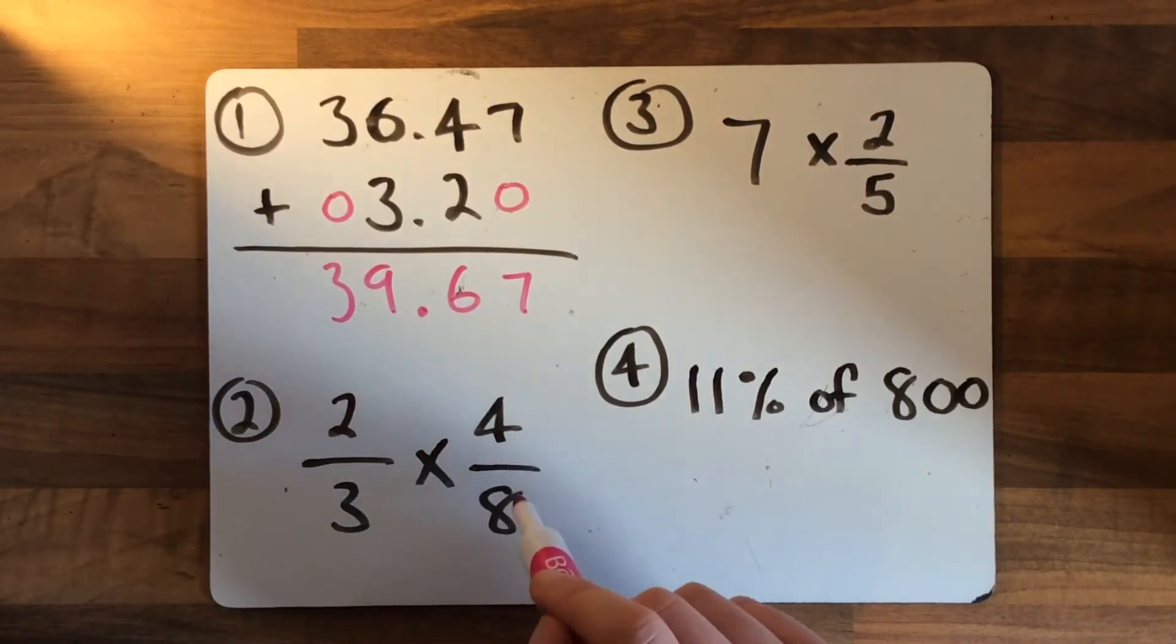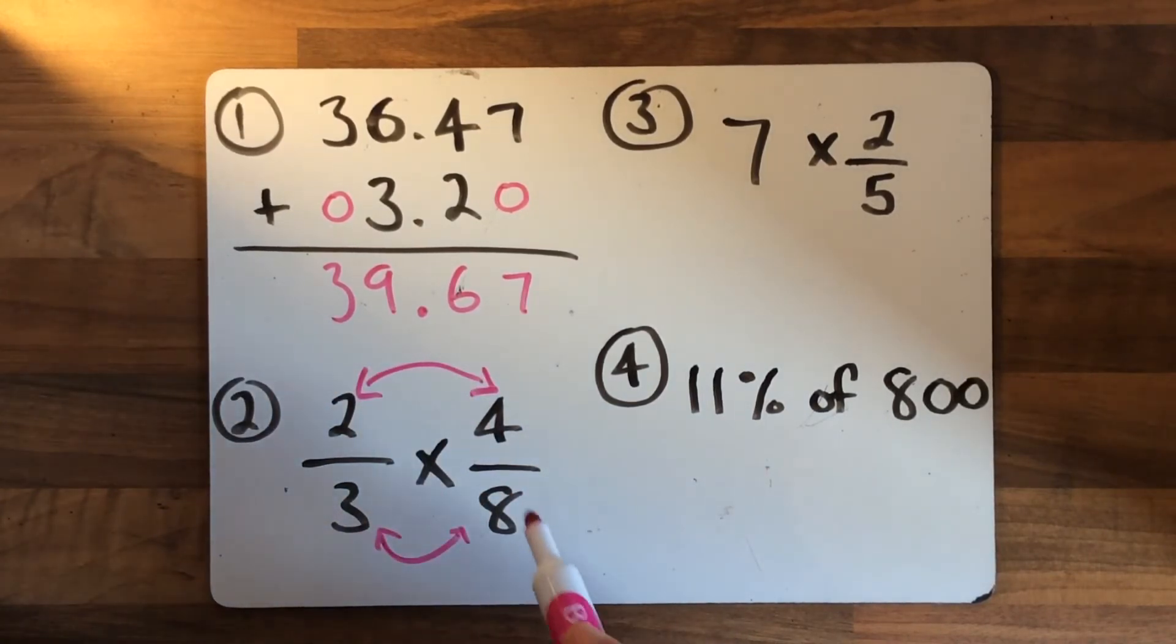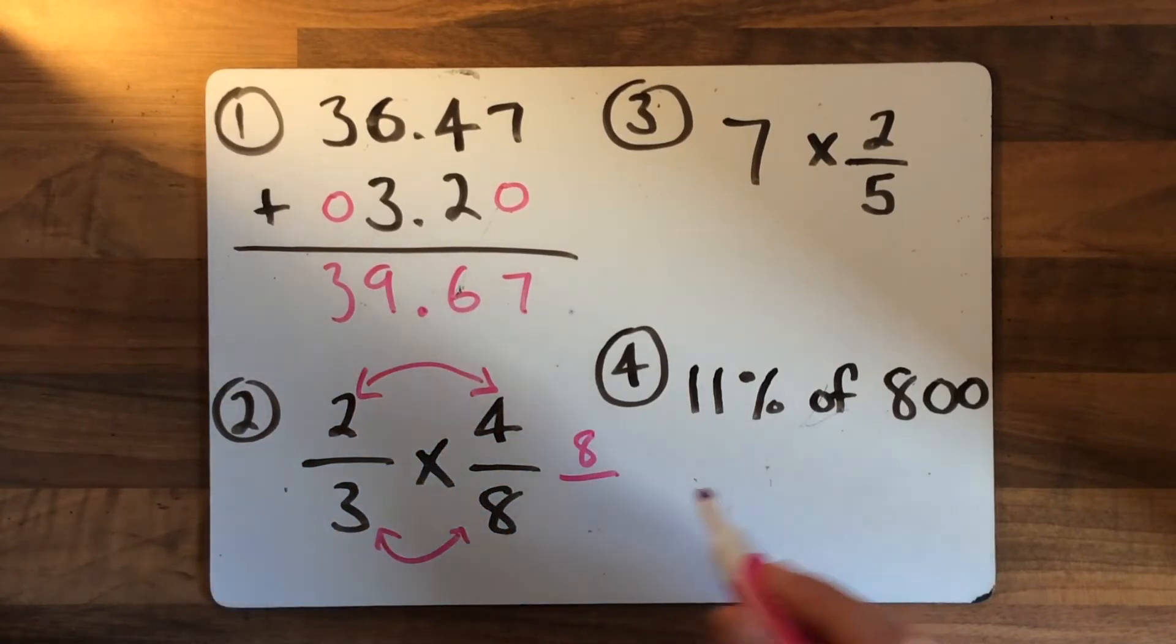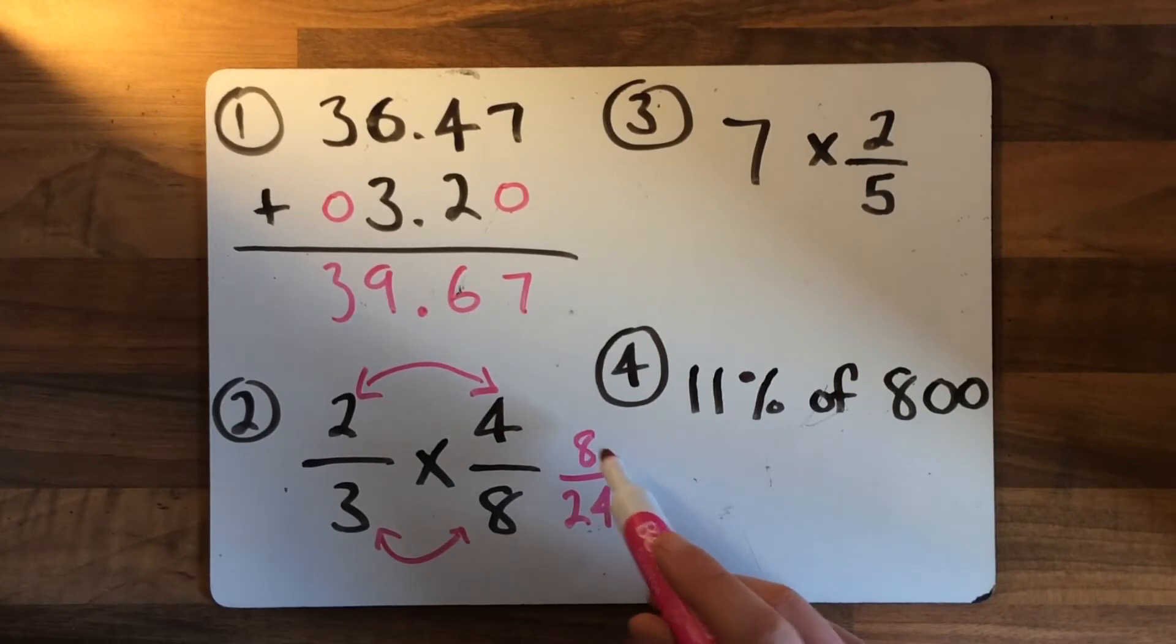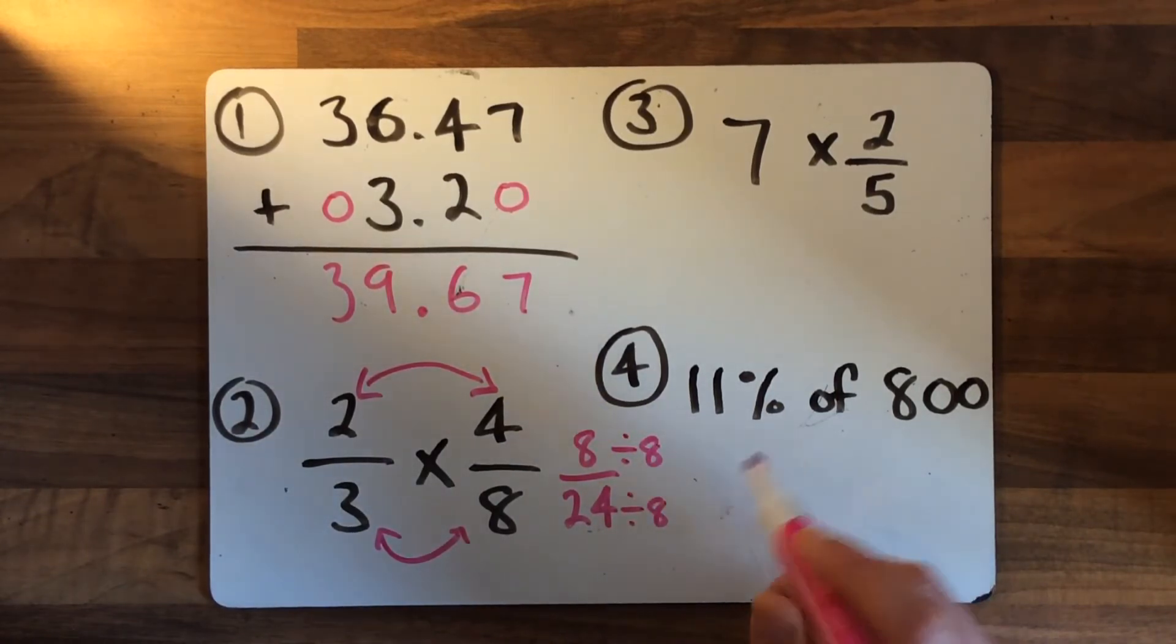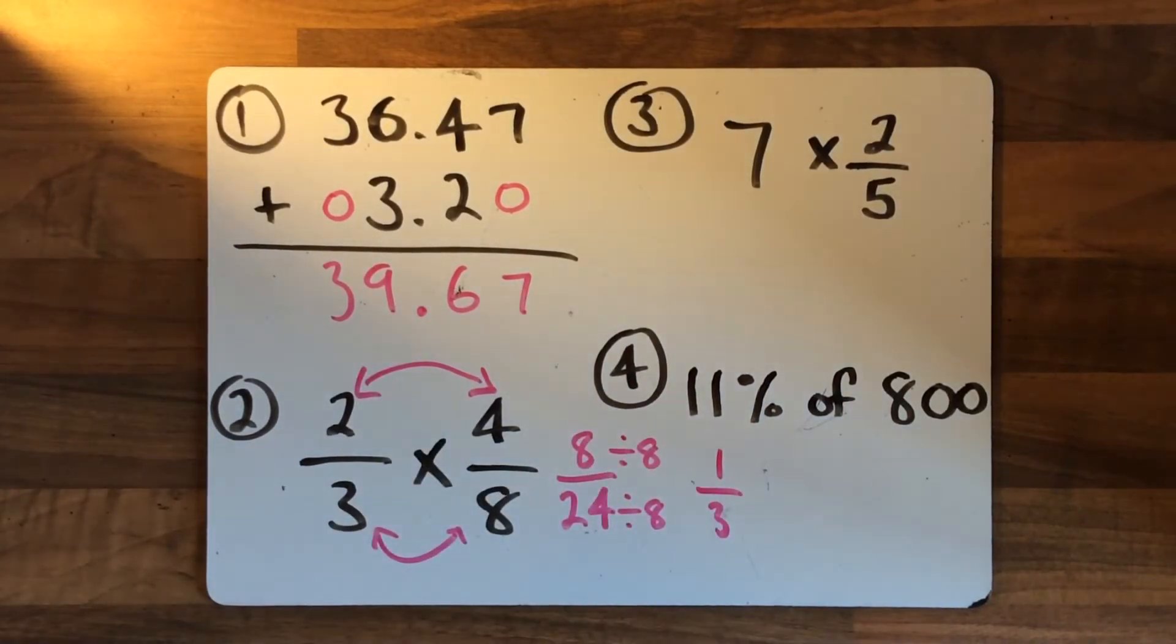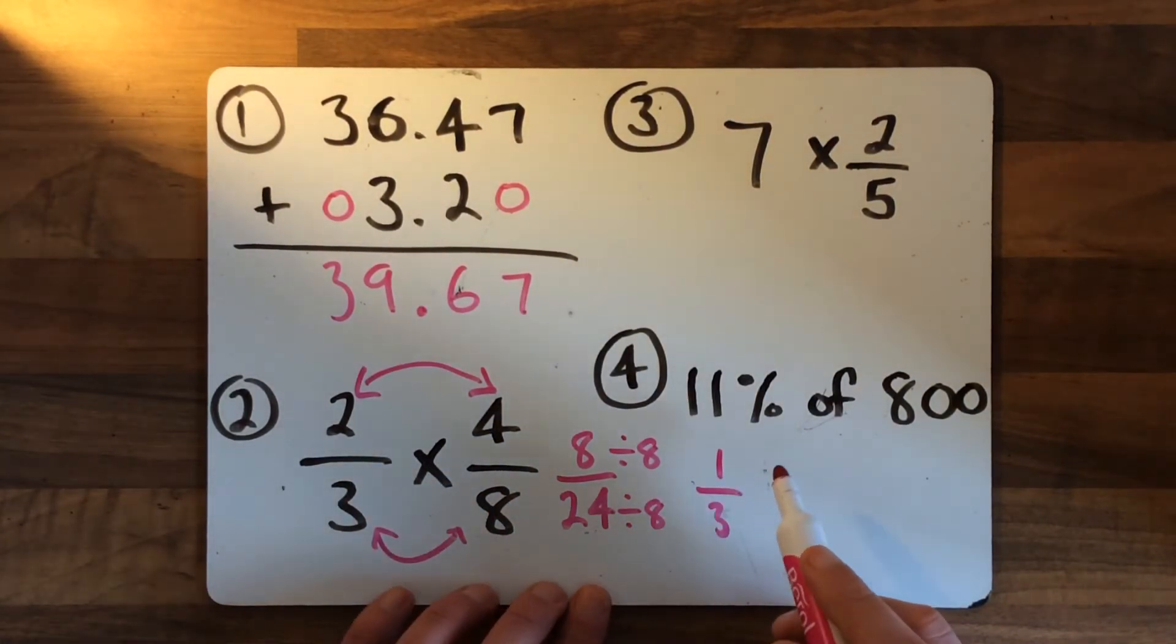Moving on to number 2: 2 thirds multiplied by 4 eighths. When we multiply fractions, we multiply the numerators together and multiply the denominators together. 2 times 4 is 8, and 3 times 8 is 24. If you wrote 8 over 24 as an answer, that's great because that's correct. This can be simplified though. We could use the method of halving and halving again, but let's look - is there a number that goes into both the 8 times tables and the 24 times tables? It's 8. So we divide the numerator and the denominator by 8. 8 divided by 8 is 1, 24 divided by 8 is 3. So one third is the answer in its simplest form.